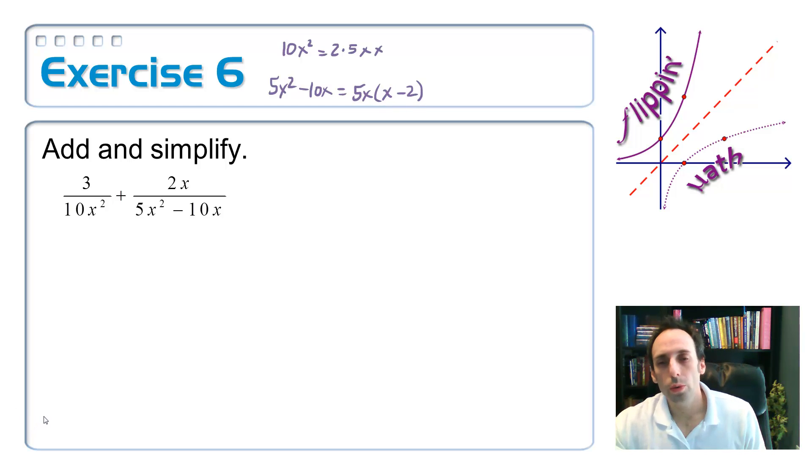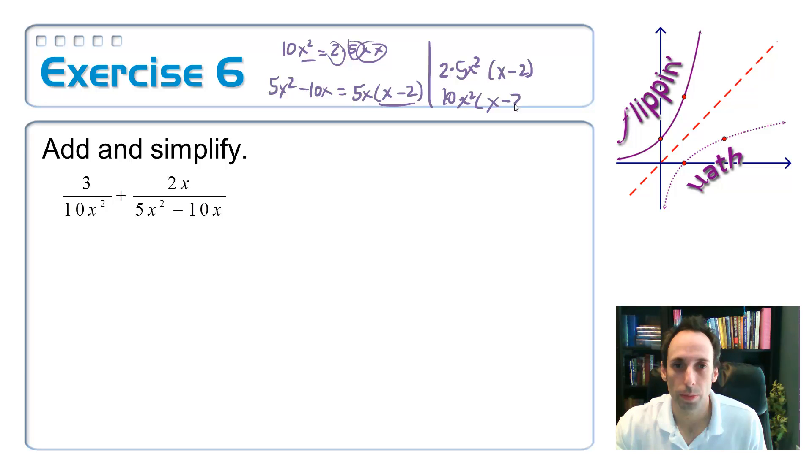When I go to get a least common denominator, the least common multiple is going to be, let's see, I need a 2 from this one. So, 2 times, I need a 5. There's a 5 in both of them. Highest power is 1. I have both of these x's, the highest power was x squared, so I need that. And then I need this factor of x minus 2. So, that is 10x squared times x minus 2.